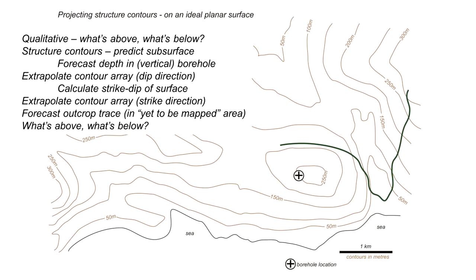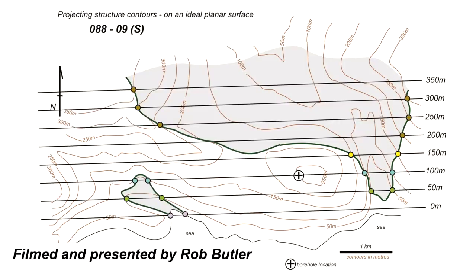Through this exercise we started with a qualitative examination of the map, then added precision through structure contours — first to test that qualitative understanding, then to forecast the depth of the boundary in the borehole, and finally to extrapolate the contour array to continue the geological map into unmapped areas. Throughout, we assumed the geological boundary is perfectly planar, which allowed us to project the contour array as we did. You can download a clean copy of this exercise from the ShearZone website and learn more about structure contours on the ShearZone YouTube channel.